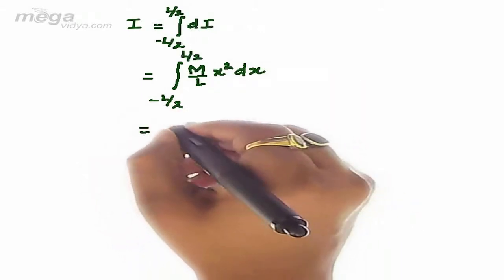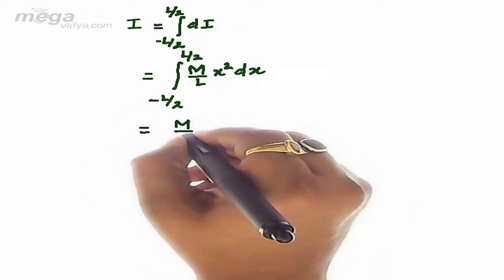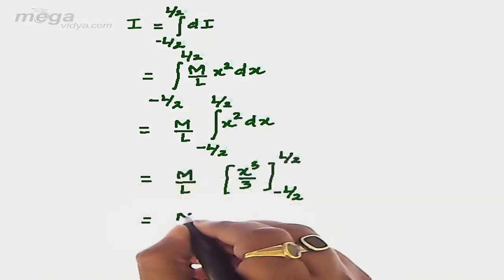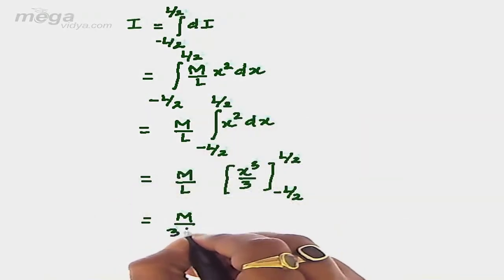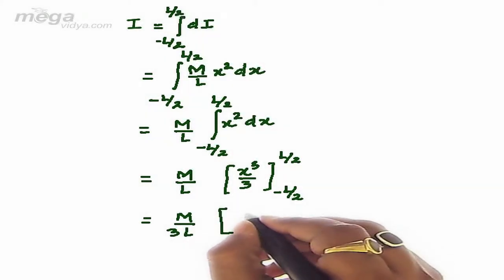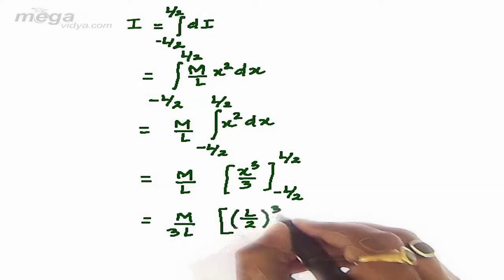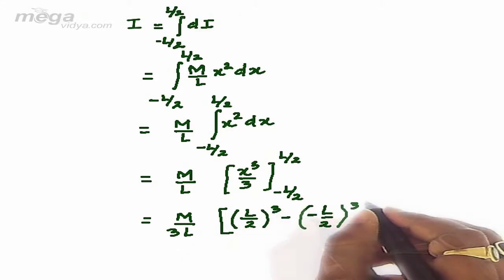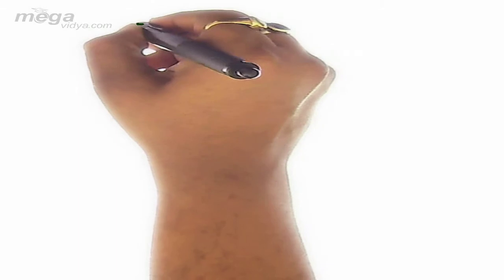Which will come out to be equal to M upon L will be taken to be common since both are constant. So it will come out to be equal to M upon 3L. Putting the limit, it will be equal to L by 2 whole cube minus minus L by 2 whole cube.